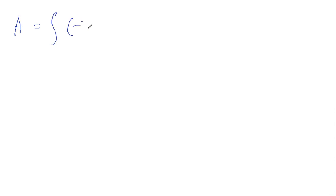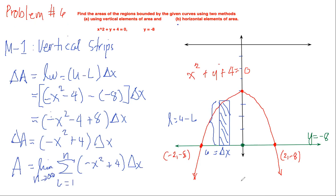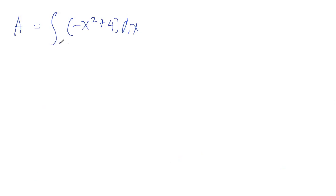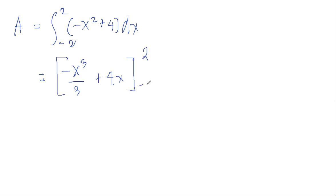The area equals the integral of negative x squared plus 4 with respect to x. Checking the boundary: since we're dealing with change of x, we start from negative 2 to 2. The integral evaluates to negative x cubed over 3 plus 4x, evaluated from negative 2 to 2.